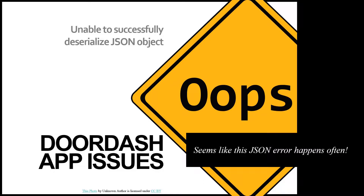Hi everybody, welcome back, this is Kim. If you're a DoorDash driver, today you may have had a hard time using the app to see last week's earnings. For at least half the day, every time I opened the app and went to the earnings page, I would get this error: 'Unable to successfully deserialize JSON object.' It was definitely an app issue. It seems like the same error happens a lot, so I wanted to look into what was causing it.